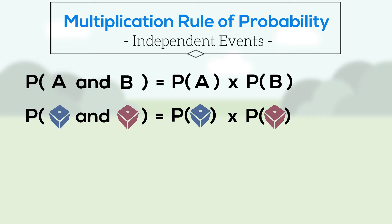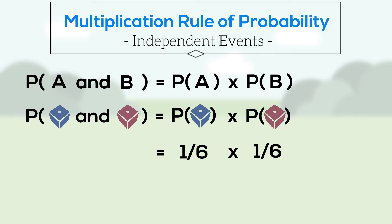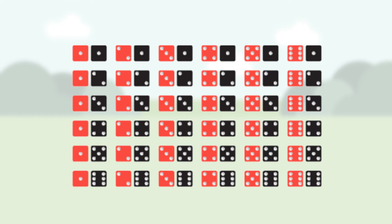This is the case whether you're rolling the dice together or one at a time. The probability of rolling a one on a die is one out of six. So the probability of rolling a one on both dice is one-sixth times one-sixth, or one out of 36. Across all 36 possible rolls of two dice, one of them is snake eyes.